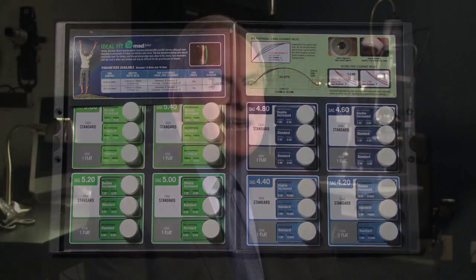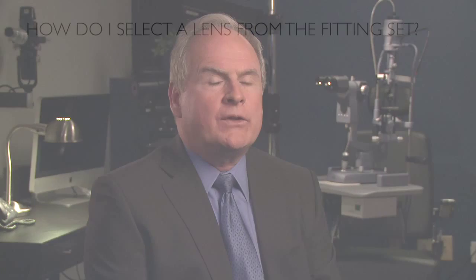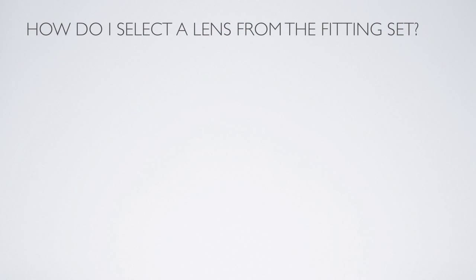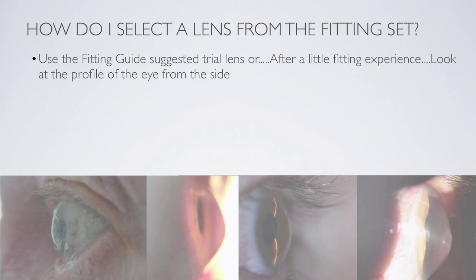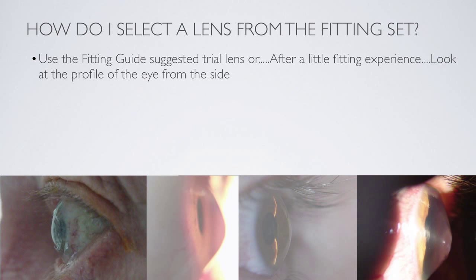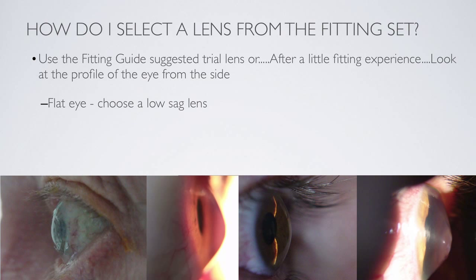Topography is not that useful. K readings aren't useful. What is useful is to just look at your patient from the side. Retract the eyelids and look at the shape of the cornea and the shape of the sclera. You're going to notice patients who have fairly flat-looking corneas and scleras, and patients who have fairly steep corneas and scleras. For the flat eye, pick a lens from the low section of the set, from the low area of sags.